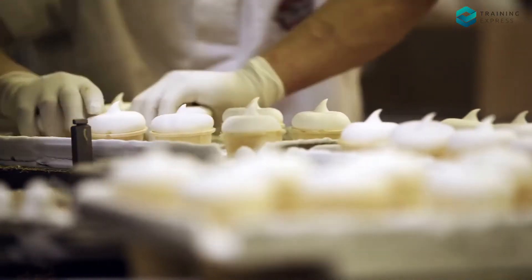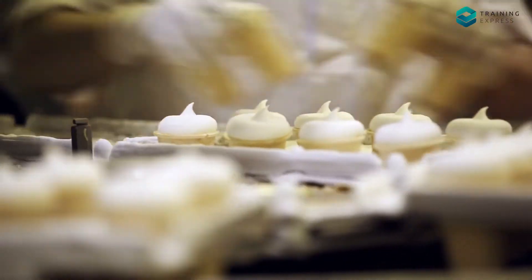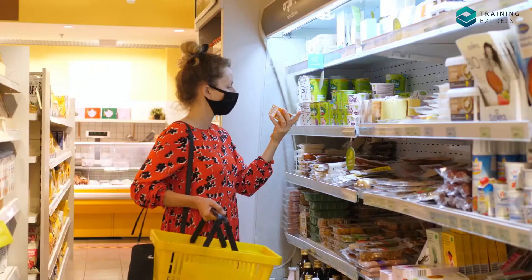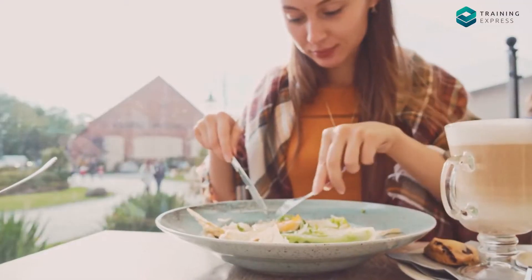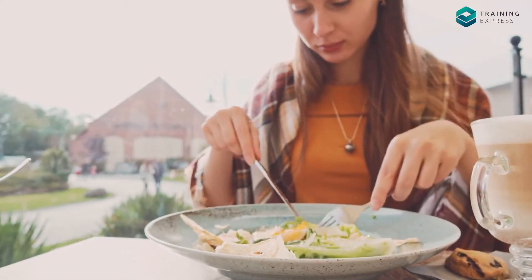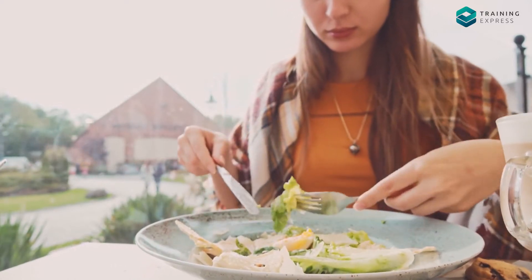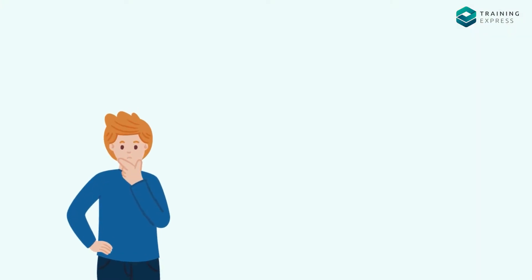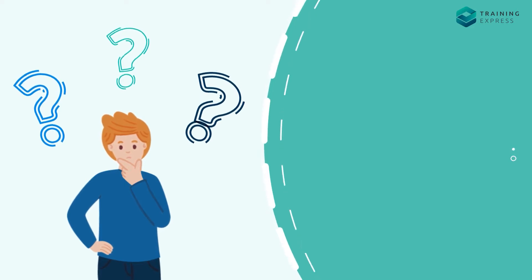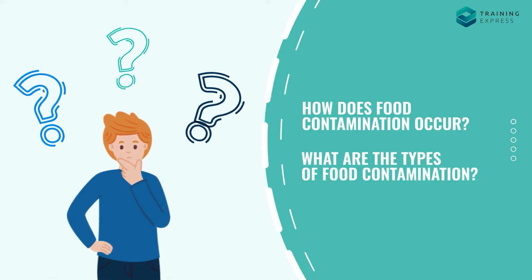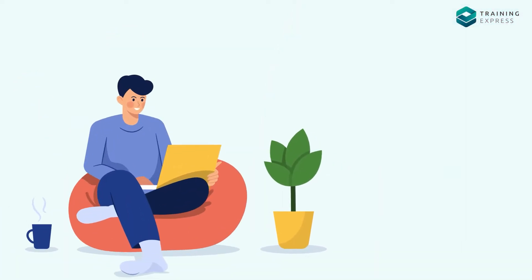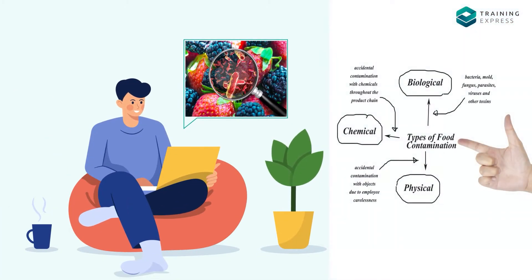Are you working in the food industry? Then food contamination is something you must learn about. The safety of your food's consumers will be in your hands. And since everyone eats food, food contamination can be a pressing issue for anyone. You might have questions as a newcomer — for instance, how does food contamination occur? What are the types of food contamination? We have pinned down the three types of food contamination you should know about. So, let's dive in.